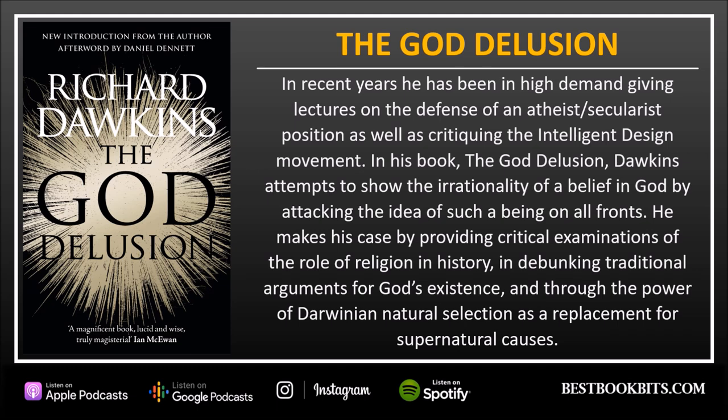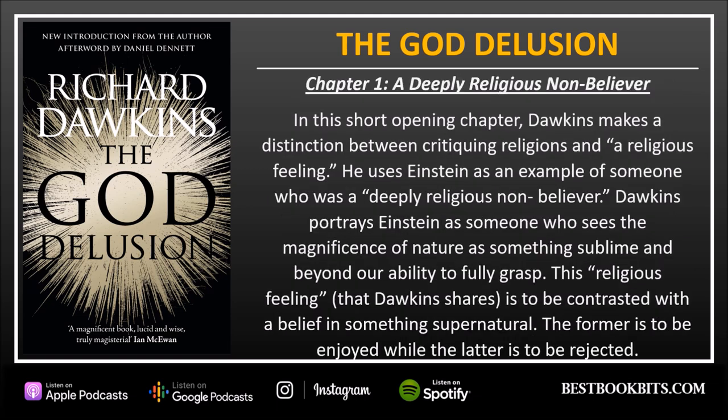In his book The God Delusion, Dawkins attempts to show the irrationality of a belief in God by attacking the idea of such a being on all fronts. He makes his case through critical examinations of the role of religion in history, debunking traditional arguments for God's existence, and through the power of Darwinian natural selection as a replacement for supernatural causes.